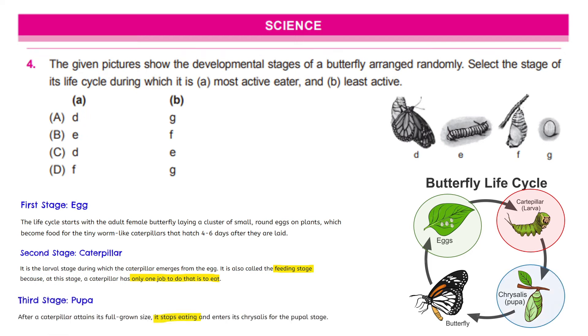And the next one is the chrysalis or pupa stage where it attains a full grown size and it stops eating and enters into its chrysalis. So, here it is the least active eater. And finally, it turns into a butterfly. So, with this, we can definitely get that it is most active eater when it is a caterpillar which is E and it is least active when it is a pupa stage which is option F. So, based on this, our right answer is option B.